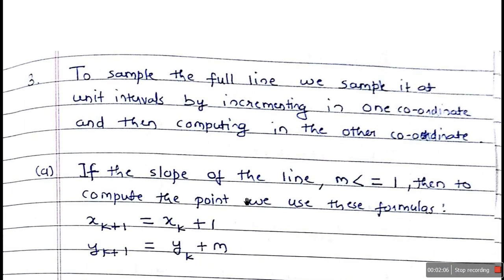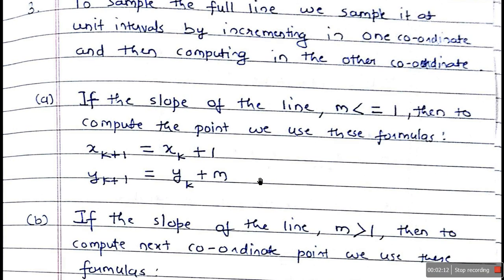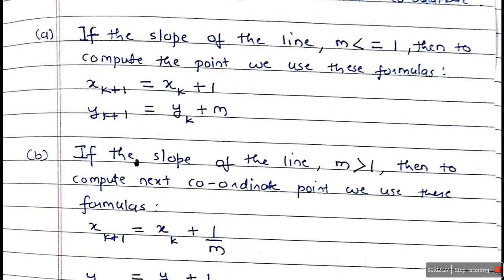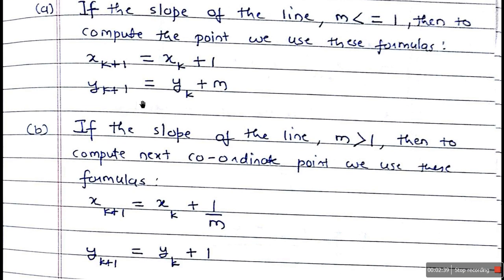To sample the full line, we sample it at unit intervals by incrementing in one coordinate and computing the other. If the slope M is less than or equal to 1, we use these formulas: XK+1 equals XK plus 1 (add 1 to the previous X coordinate), and YK+1 equals YK plus M (add the slope M to the previous Y coordinate).